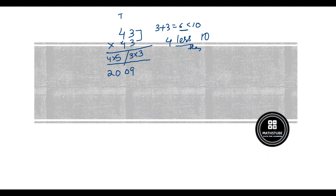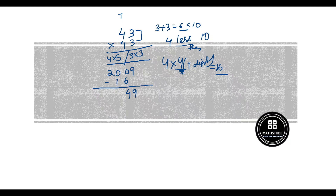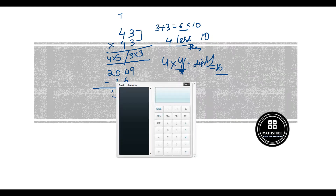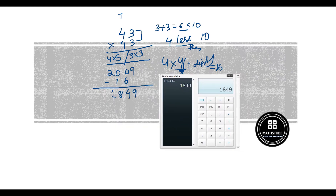In the previous case we added because the sum was more than 10; here it's less than, so we subtract. 2009 minus 16 gives us: 9 comes down, 10 minus 6 is 4, 9 minus 1 is 8, leaving 1. Answer is 1849. Let's verify: 43 into 43 equals 1849. Correct!